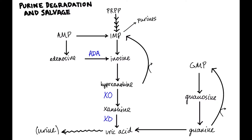Those are the degradation steps. What about salvage? Salvage just means recycling — taking something you're no longer using and converting it into something you can use. The reason we want to do that is to minimize waste. If you have breakdown products and need to make more nucleotides, rather than going through the whole de novo synthesis pathway, you can take waste products and convert them back into nucleotides to use in making DNA.